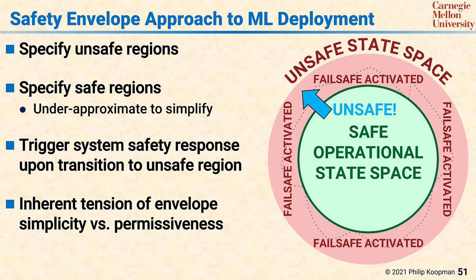So while the use of a safety envelope reduces the permissiveness — in other words, the ability of the underlying control system to exercise the complete area of the safe state space — it does make it much more feasible and much simpler to ensure safety is maintained, even if the system cannot be proven to be safe for all conditions.